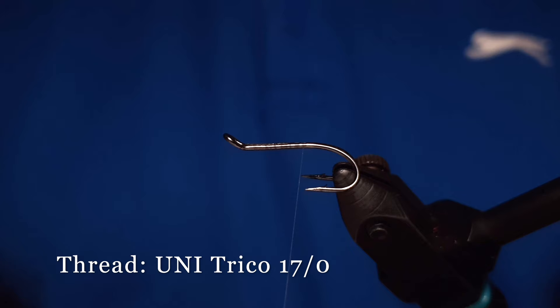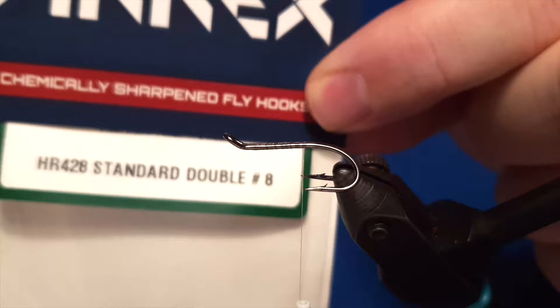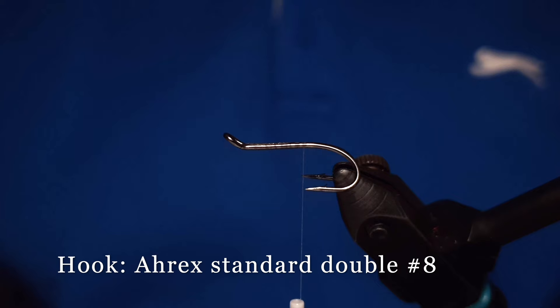The thread we are using is Þúrni trico 17-0, which is only about 40 deniers, and we are using a standard double hook number 8, which is an RX hook.